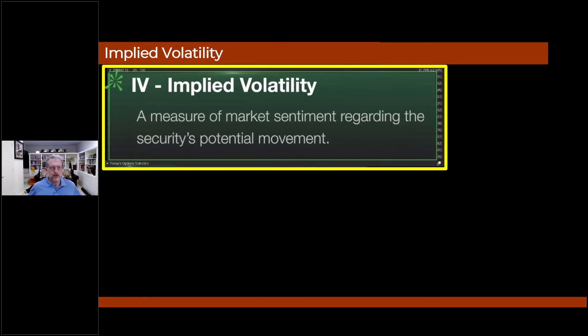This one comes right off of Thinkorswim: implied volatility, a measure of market sentiment regarding the securities potential movement. Sounds logical, but as a CPA and a number guy, that just didn't do it for me. I don't know how you measure market sentiment and what does that mean?